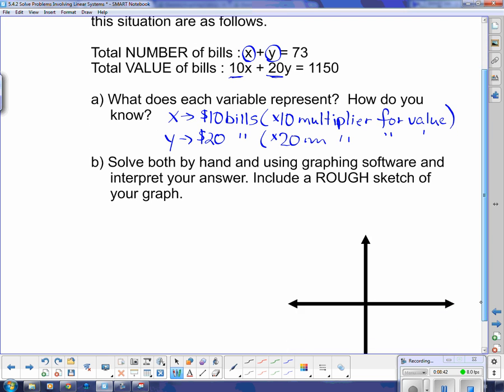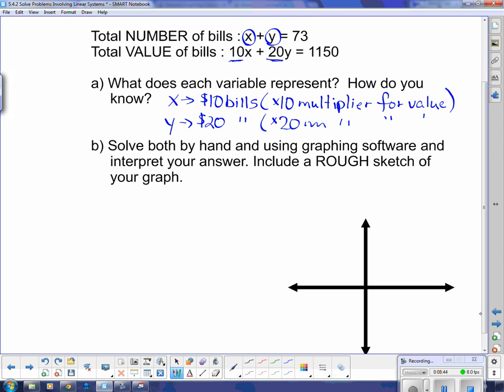Solve both by hand using algebra and the graphing calculator or graphing software. So I get x plus y equals 73, is my first equation. And then 10x plus 20y equals 1150, is my equation number 2.